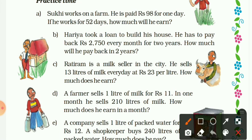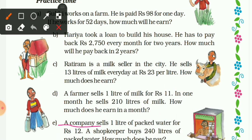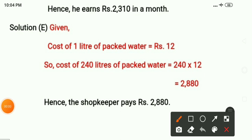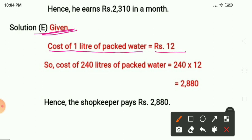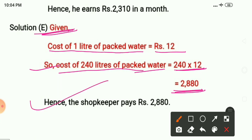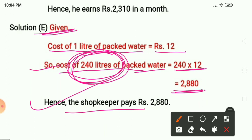Question E: A company sells one liter of packed water for 12 rupees. A shopkeeper buys 240 liters. Solution: Cost of one liter = 12 rupees. Cost of 240 liters = 240 × 12 = 2880 rupees. Hence, the shopkeeper pays 2880 rupees for 240 liters of packed water. This completes the Practice Time topic. See you all in the next video — till then, be safe and be healthy.